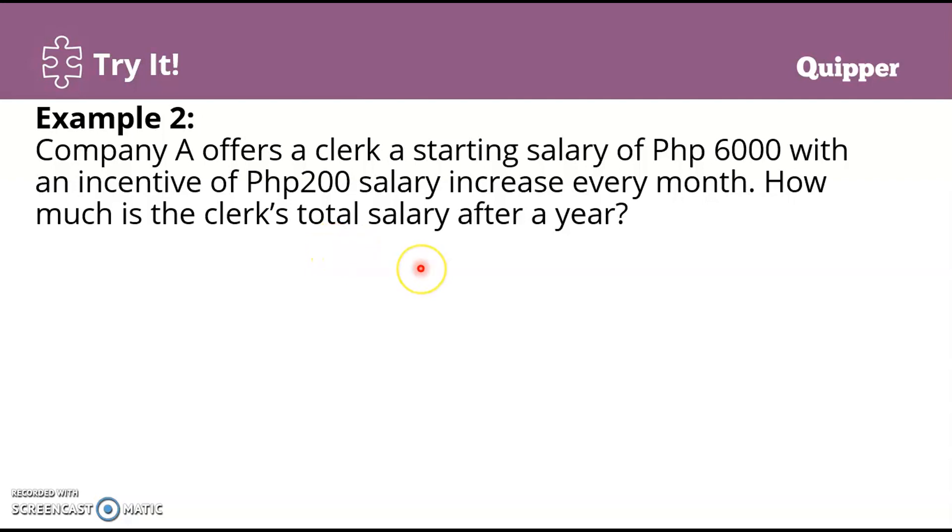But in this situation, again, we do not know the last term. We don't know how much the salary will be after a year on the 12th month. We don't know the last term, so therefore we are going to use the second formula. Actually, there's no need for us to look for the common difference because it's already given: 200 pesos salary increase—that is our common difference.